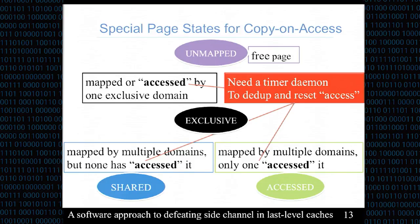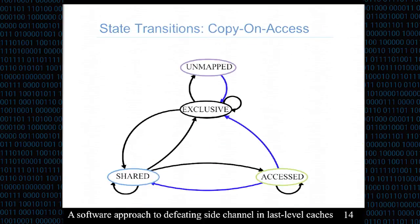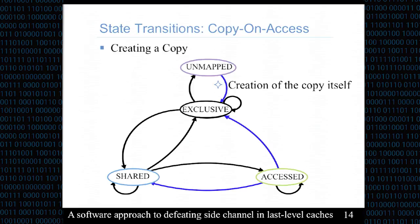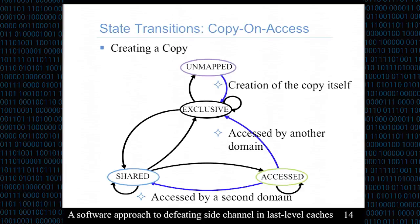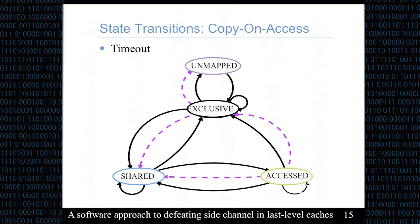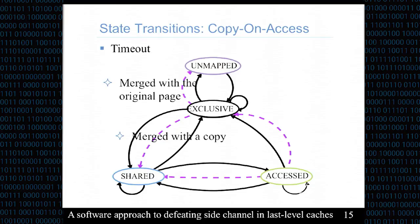We also need timers to periodically deduplicate copies. One key event causing state transitions is copy creation, which transitions an unmapped page to exclusive for the new copy, and transitions the original page from accessed state to shared or exclusive depending on how many domains share it. Another event is the timeout event, used to merge copies and reset the access bit for a physical page.